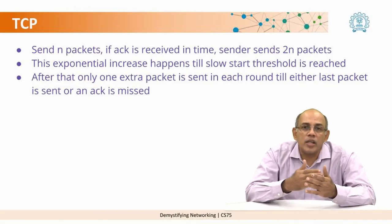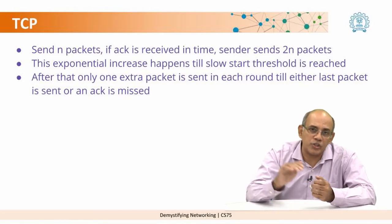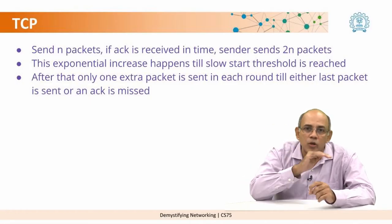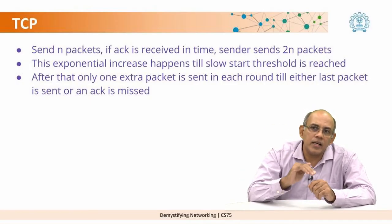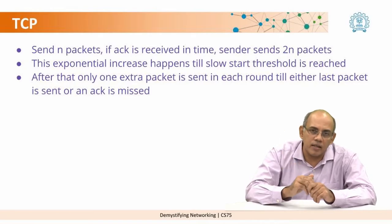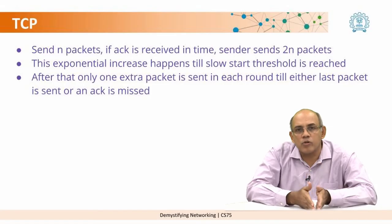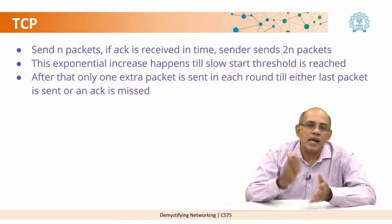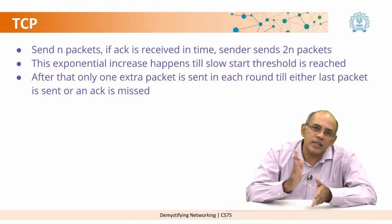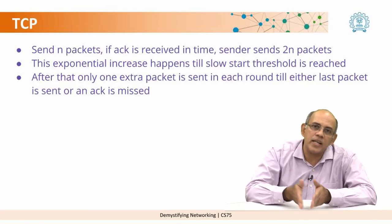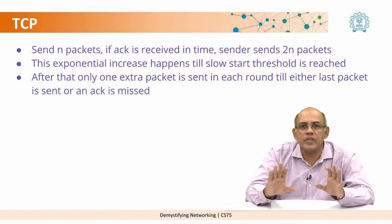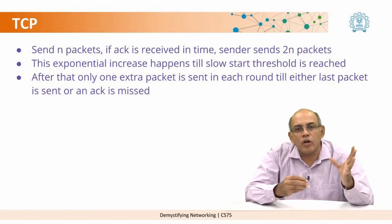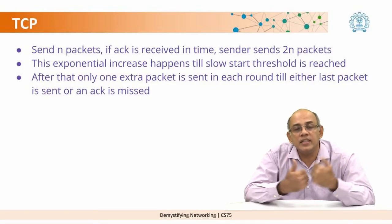Obviously it cannot keep growing exponentially forever, so there is a threshold — called in technical terms the slow start threshold. Up to that number of packets it grows exponentially, and then after that it sends one extra packet in each cycle. For example, if in the first round you send 1, the next round 2, then 4, then 8 — and if 8 is the threshold — after 8 you send 9, then 10, then 12, and so on until either the transmission is complete or some acknowledgement does not come back within the expected time.